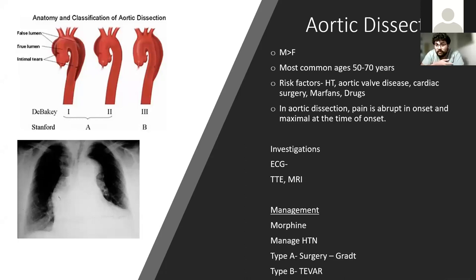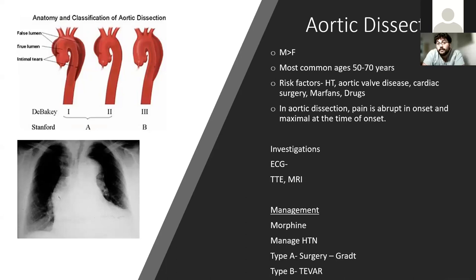The easiest classification to remember is the Stanford system: A for ascending aorta, B for beyond — the descending arch of the aorta. The key clinical features of aortic dissection are sudden onset chest pain classically radiating to the back, tearing in nature, and the presence of a new aortic regurgitation murmur — because the tear forms an internal flap and blood circumvents the aortic valve, causing aortic regurgitation.